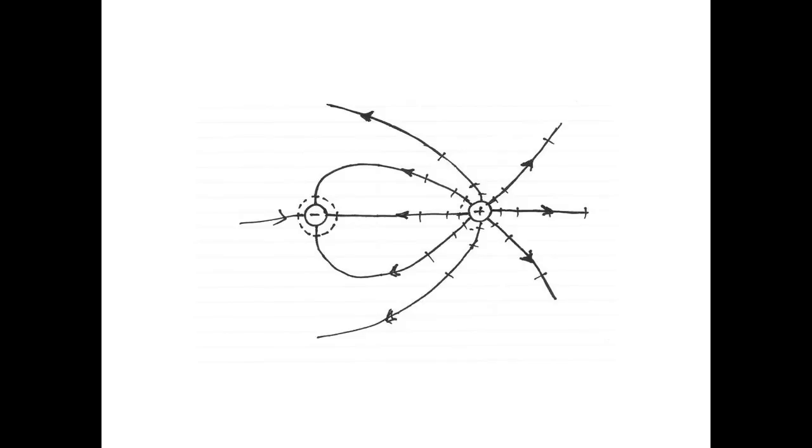You'll notice that they end up being more densely packed on the left side of the positive charge, just between the positive and the negative, than on the right side of the positive charge. And that makes sense, because the electric field is stronger between the two charges than it is right of the positive charge.